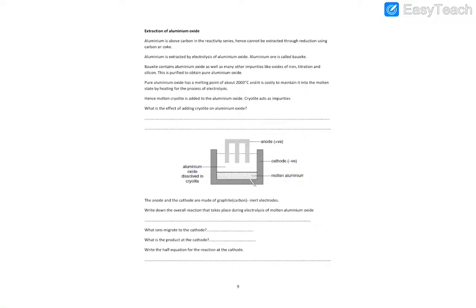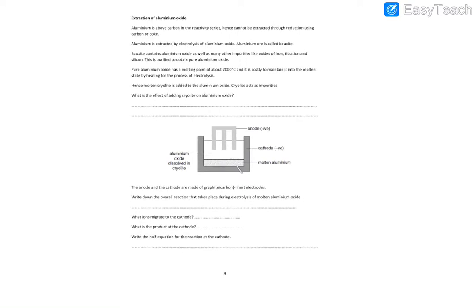Let's see extraction of aluminum oxide. Aluminum oxide is used as an aluminum ore and it's used to obtain aluminum. Because aluminum is above carbon in the reactivity series, it cannot be extracted by reduction.